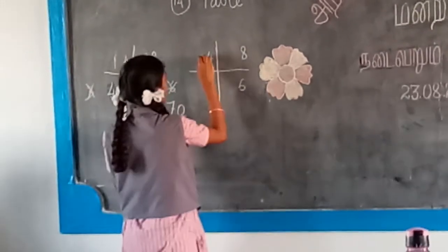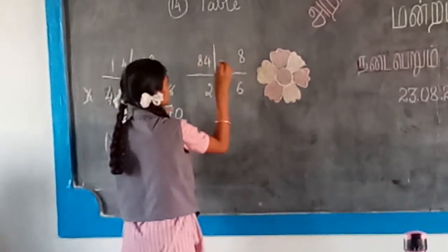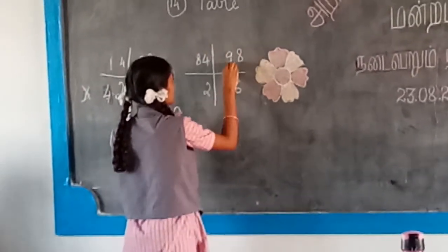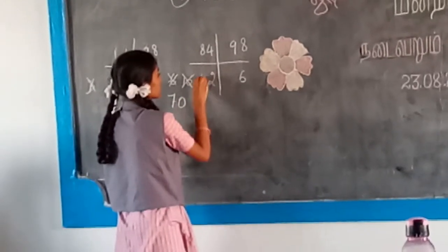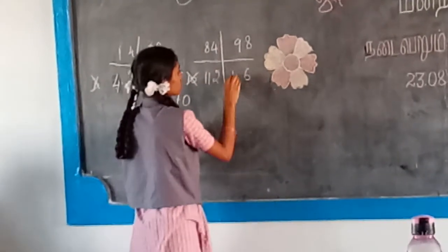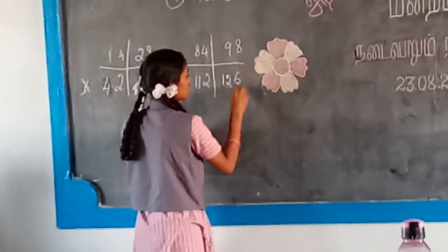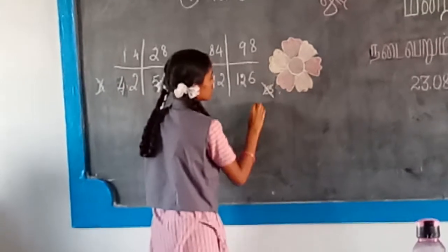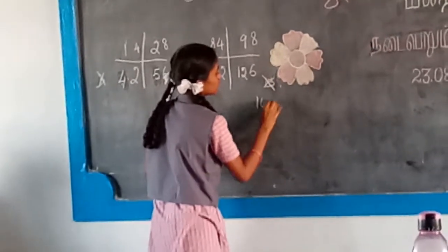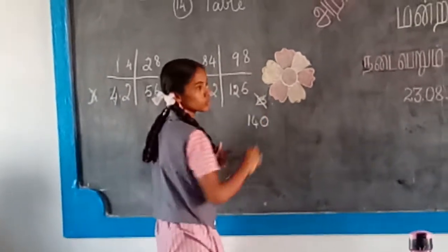At the end, nine. Ten, kareas is eleven. Twelve, thirteen, kareas is forty. Three, seven.